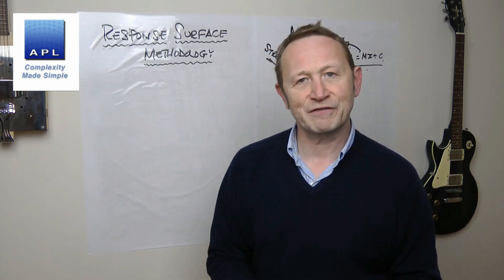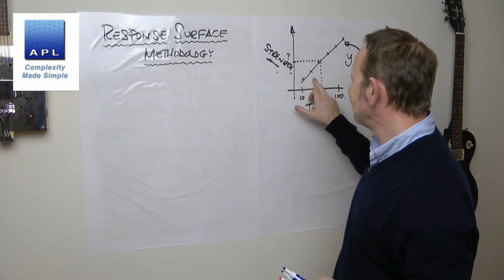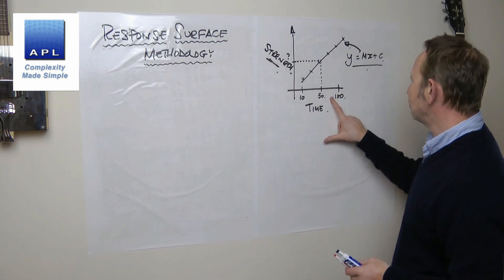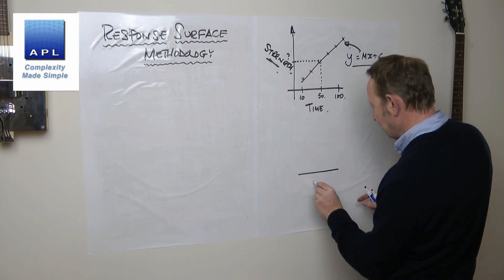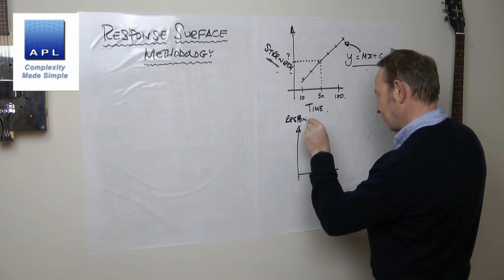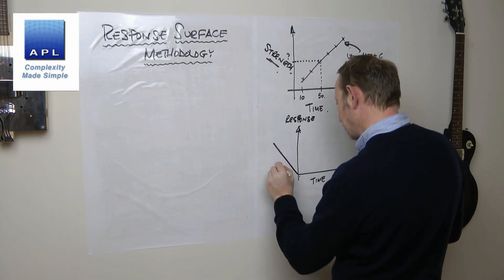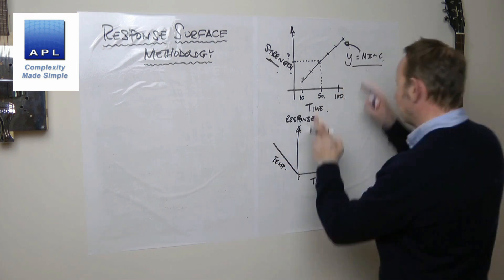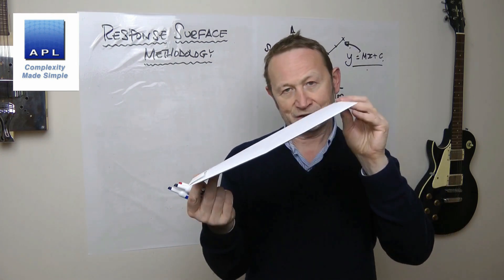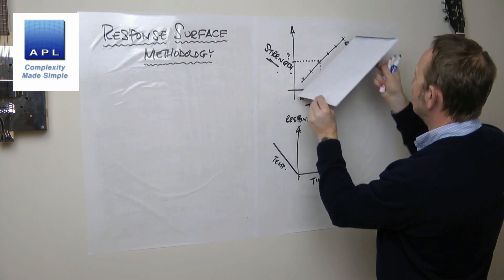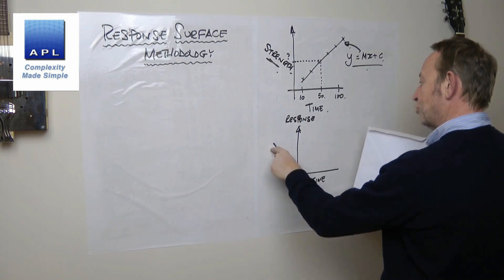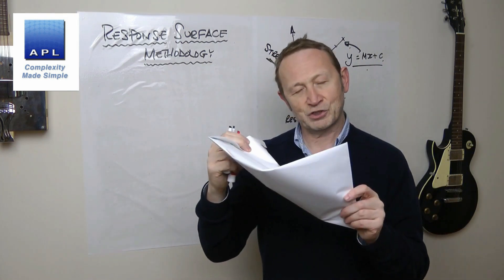The diagram is very useful. And the response surface is essentially the same thing, except it's not two-dimensional — it's three-dimensional. If we were to test time in one direction with the response going that way, we've also got temperature in another direction. So instead of it being a flat line, it's now a plane. That plane is known as a response surface.